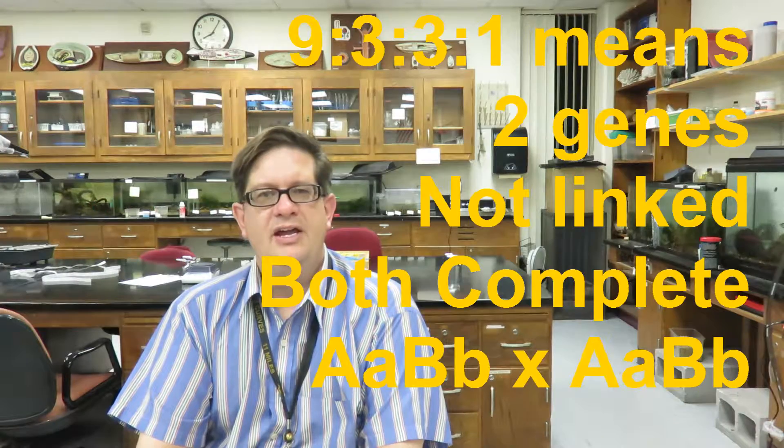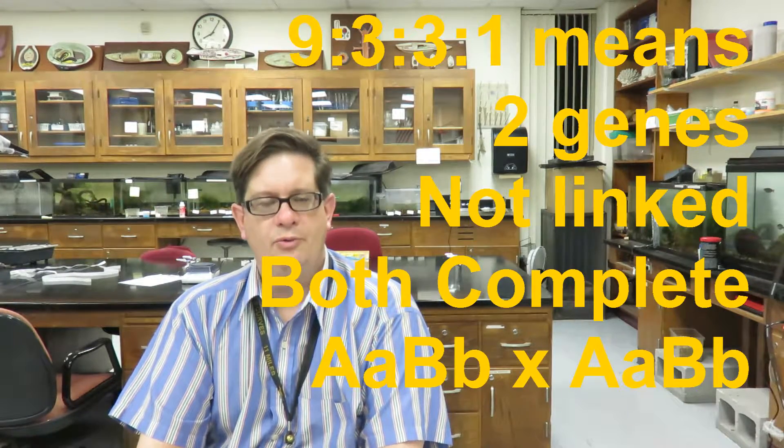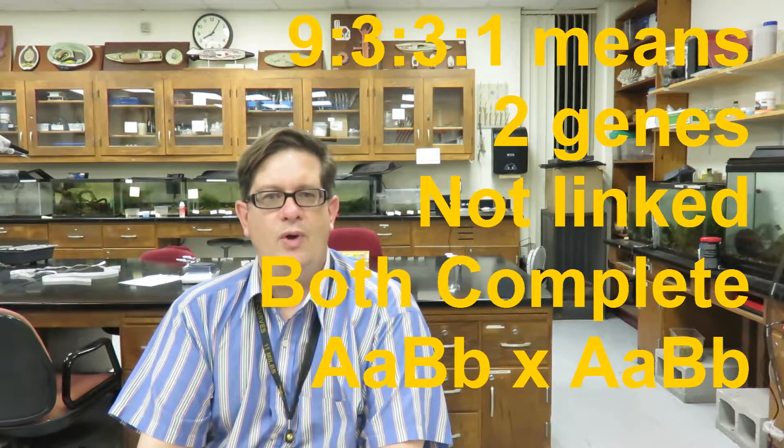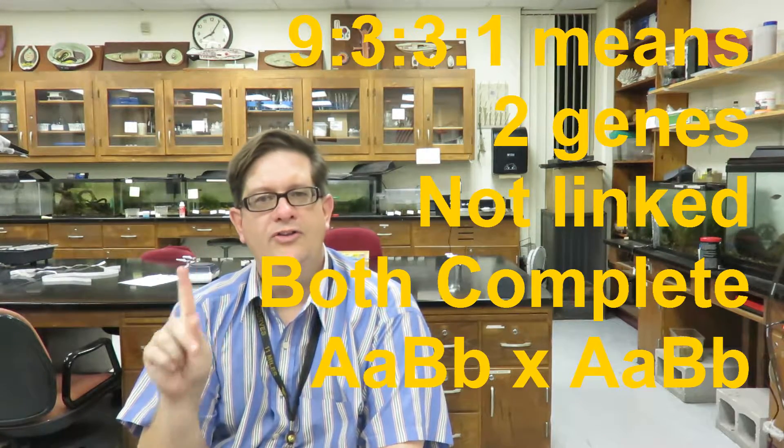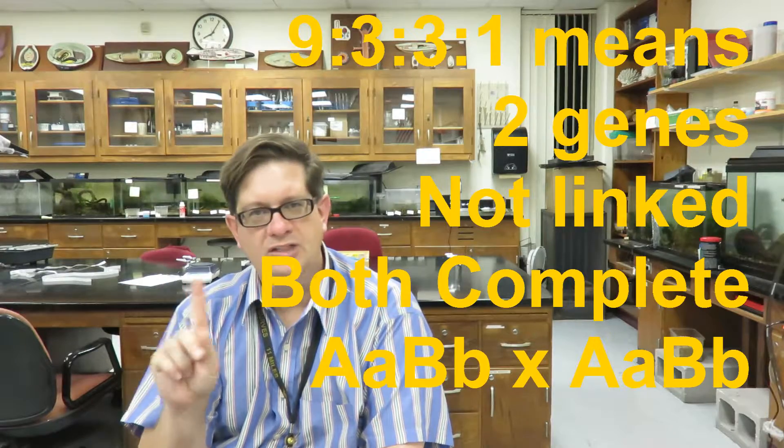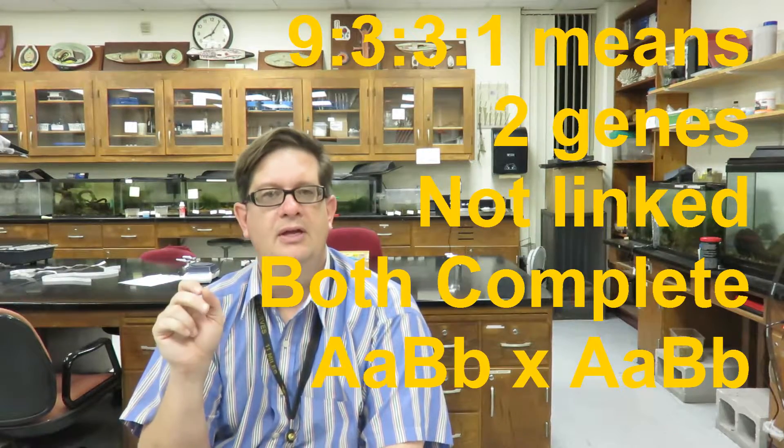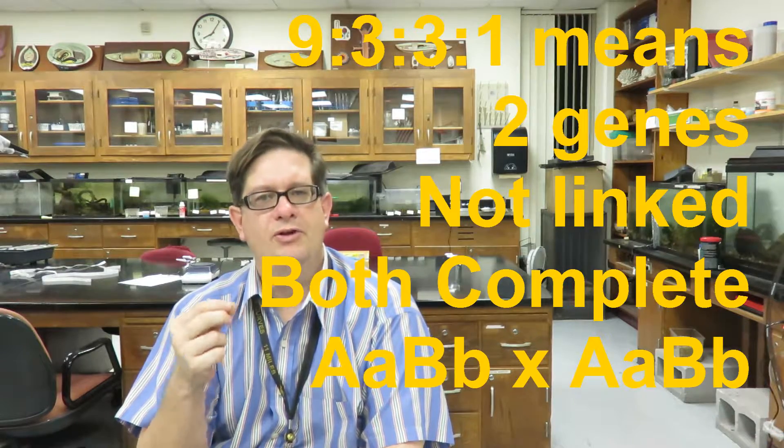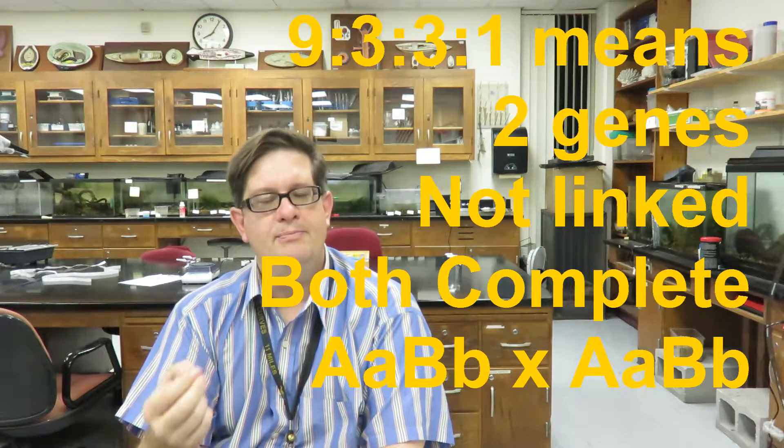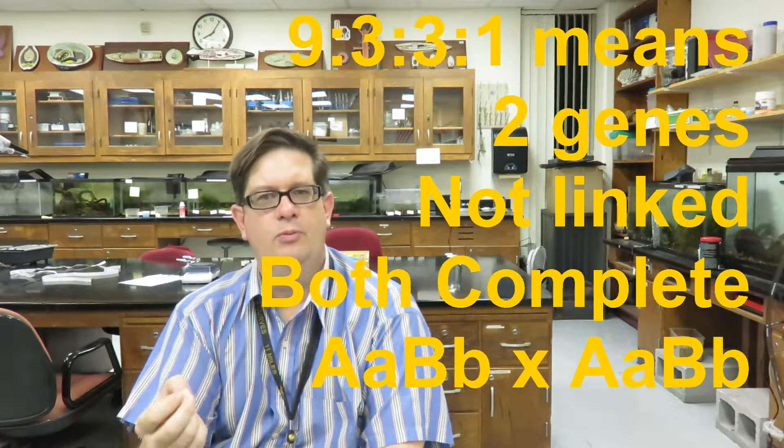If you have a 9 to 3 to 3 to 1 ratio, you know that there are two genes involved on separate chromosomes, that both genes have an allele with complete dominance, and that both parents are heterozygous for both genes.